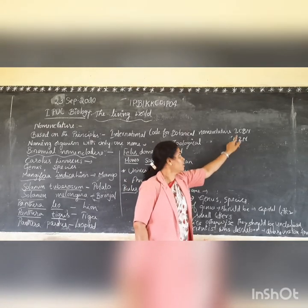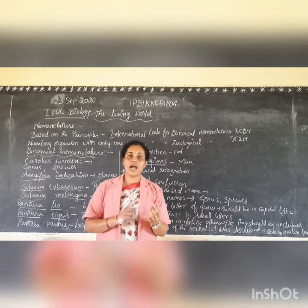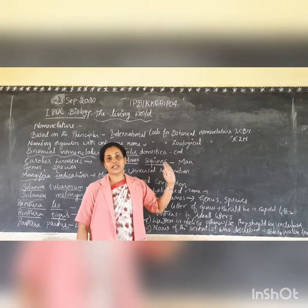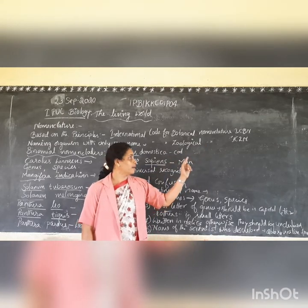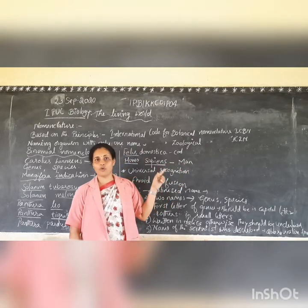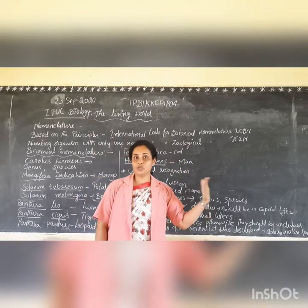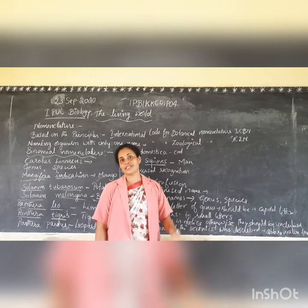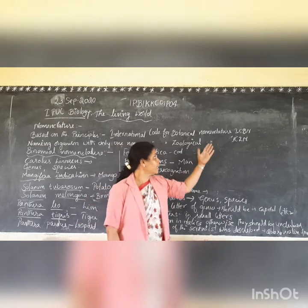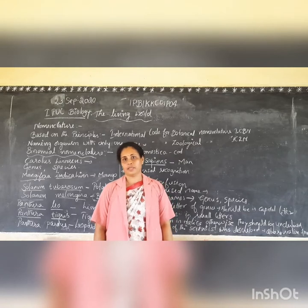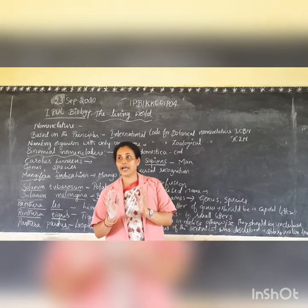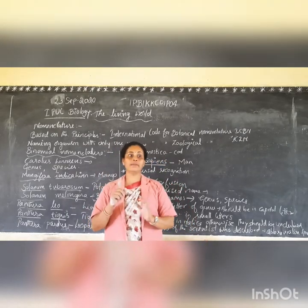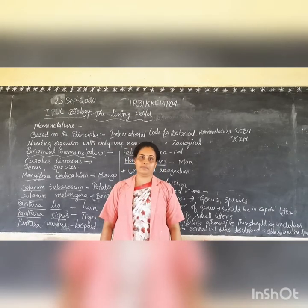So ICBN stands for International Code for Botanical Nomenclature, and ICZN stands for International Code for Zoological Nomenclature — 'zoo' meaning animals. Animals are given scientific names through ICZN. This means one organism is identified all over the world with the same name — one particular name for a particular species.